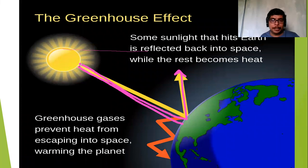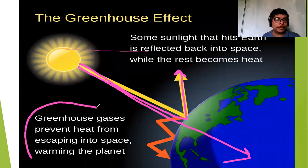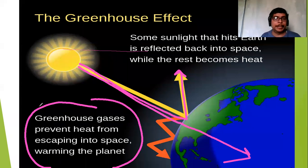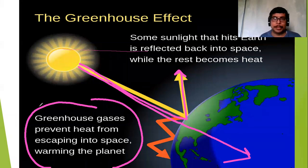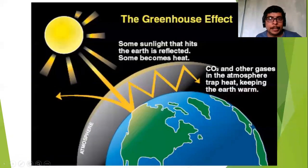These gases do not let the heat escape into space — they absorb it within the earth. Such gases are called greenhouse gases. Greenhouse gases prevent heat from escaping into space, which warms the temperature. Such gases are called greenhouse gases.